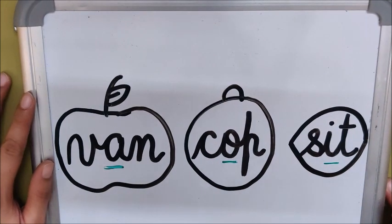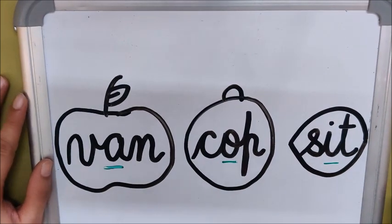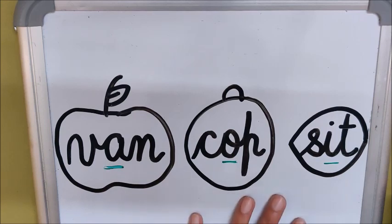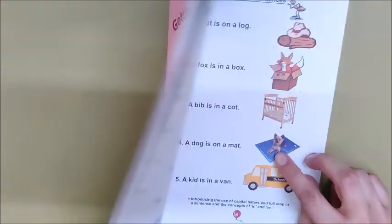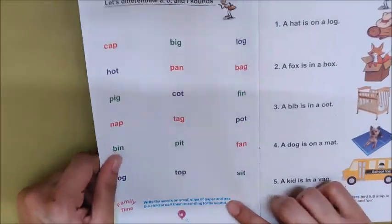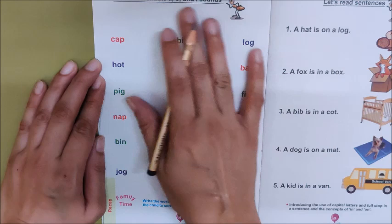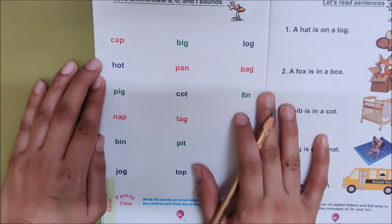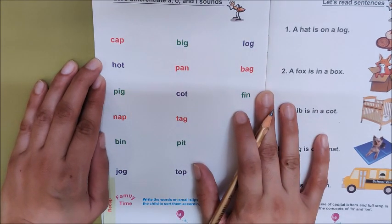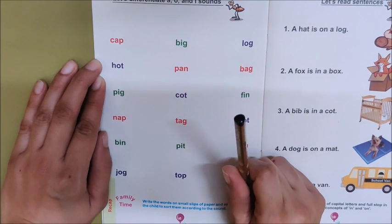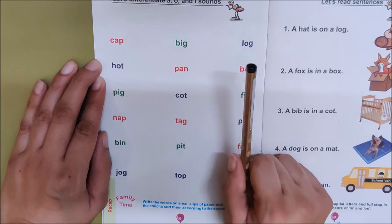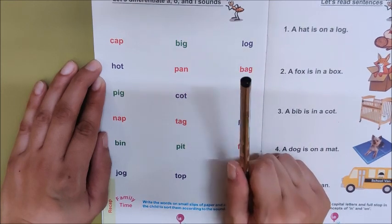Now I think you have understood this concept of how to differentiate words as apple, orange, and idly words. So it's time to take your reader and open page number 8. I have taken my reader and opened page number 8. We have so many words here and we have to look for apple words first. The words which have 'A' as the middle sound are apple words. Let us read and find them.